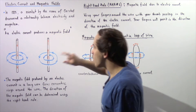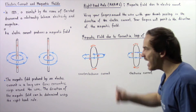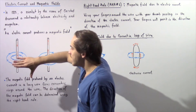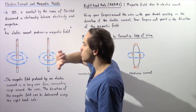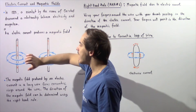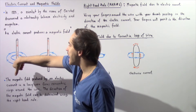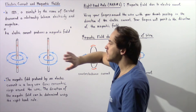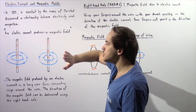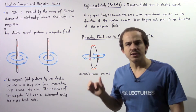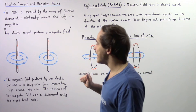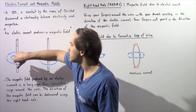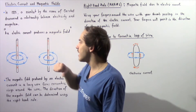We notice that our electric current points downward, so that means our thumb should point downward. Then we take our fingers, wrap our hand around the wire, and the direction of the motion our fingers create will be in the same direction as our magnetic field. So our direction will form concentric circles that will point in this direction.